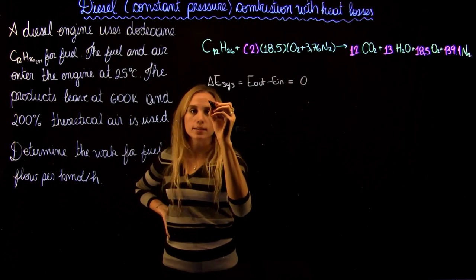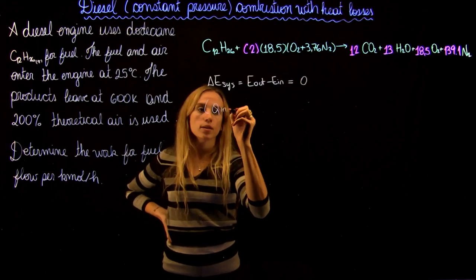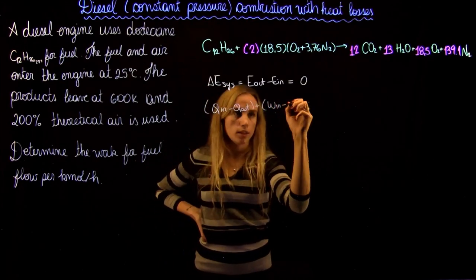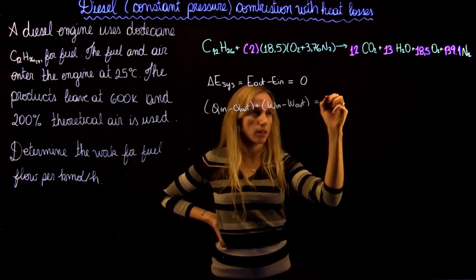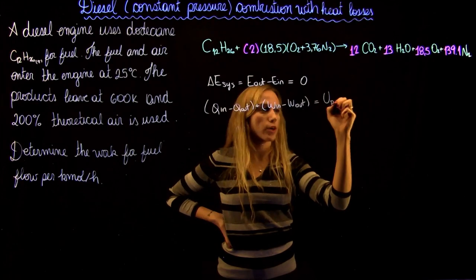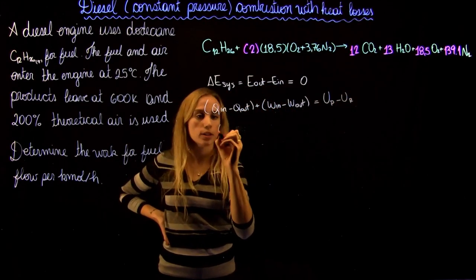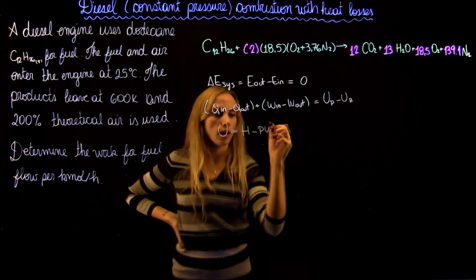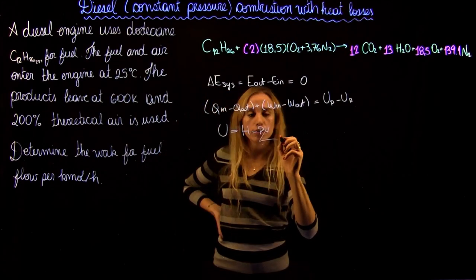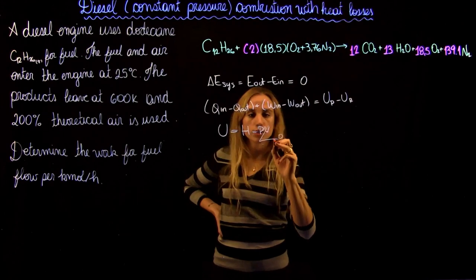So we can rewrite this as Q in minus Q out plus work in minus work out is going to equal the U of the product minus U of the reactant. And we can rewrite this as H minus PV. And we can neglect PV for solids and liquids, so this can be zero in our case.